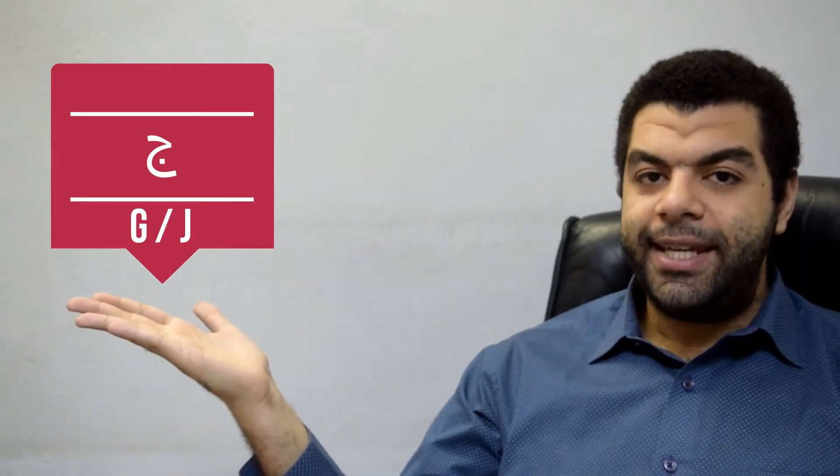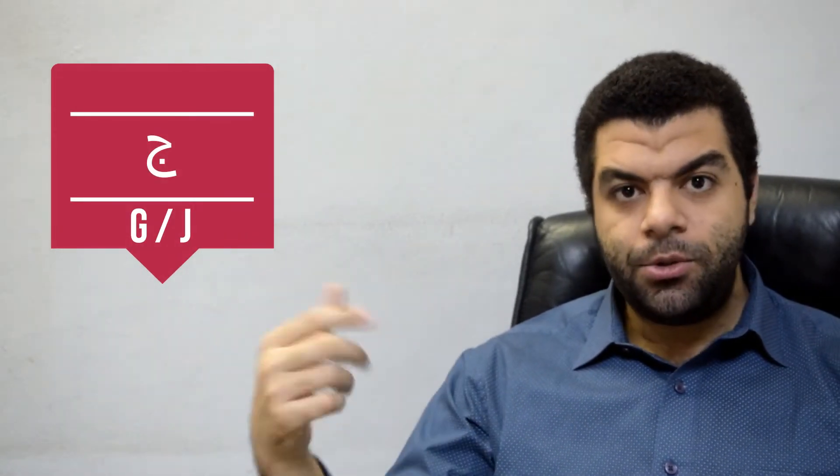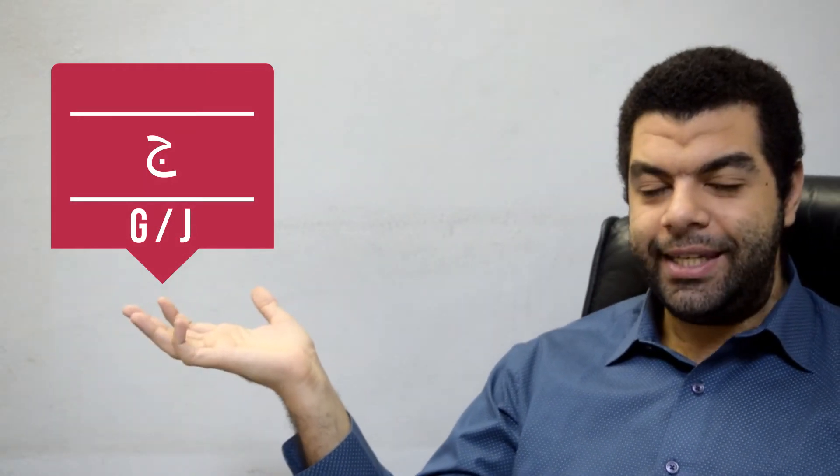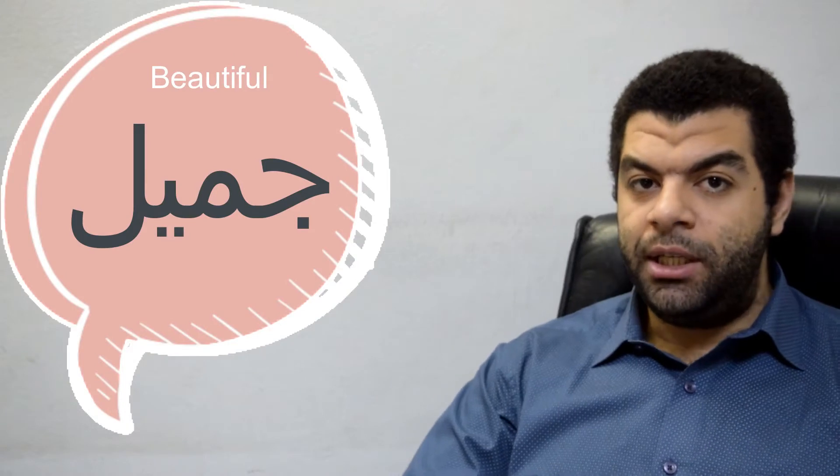The second letter that we have is ج (jeem). In Egyptian Arabic, we say it as a G sound — so instead of the J sound, we say G. A very simple example would be 'jamil' — in Egypt, we say 'gamil,' which means 'beautiful.' Please note that some areas in Egypt do say this letter as J, like it's supposed to be in MSA, but it depends on where you come from. If you go further to the south of Egypt — we call it Upper Egypt — they say J.